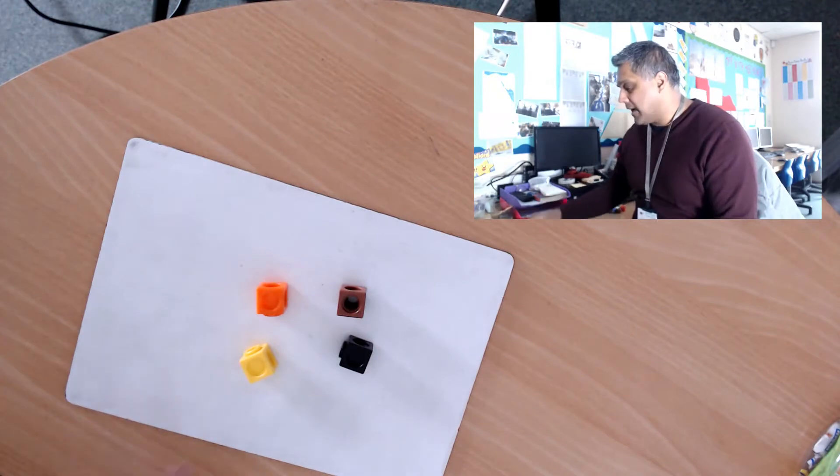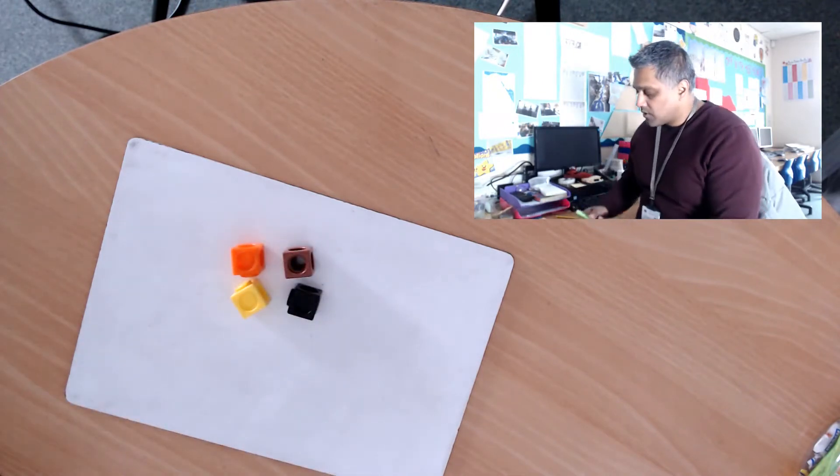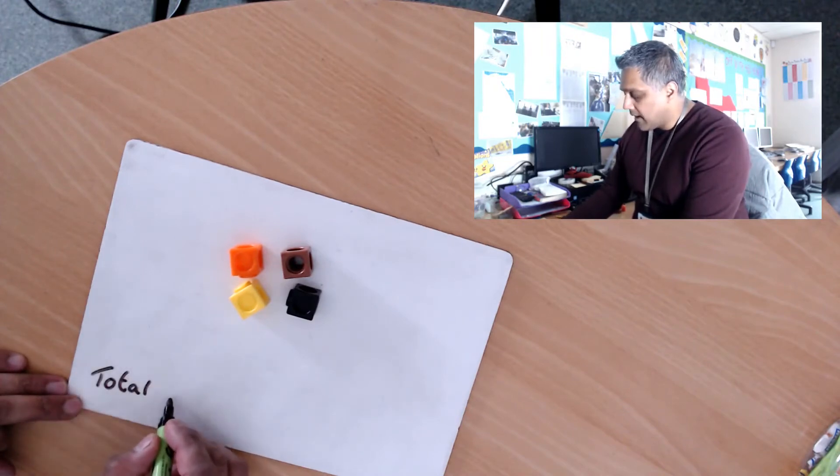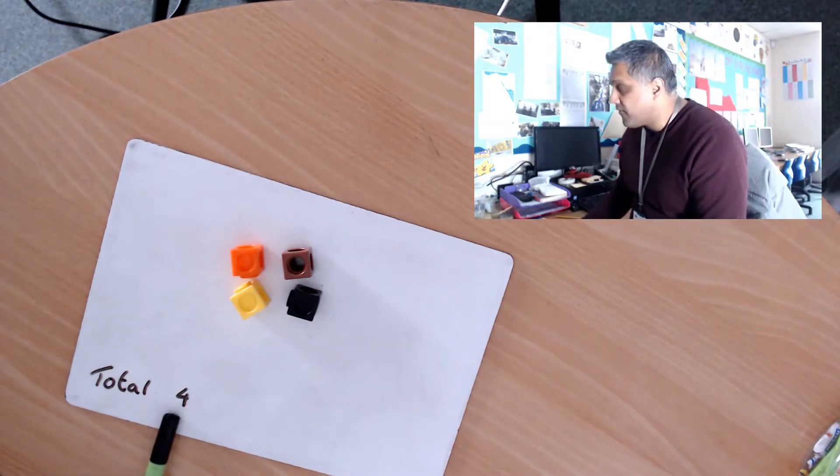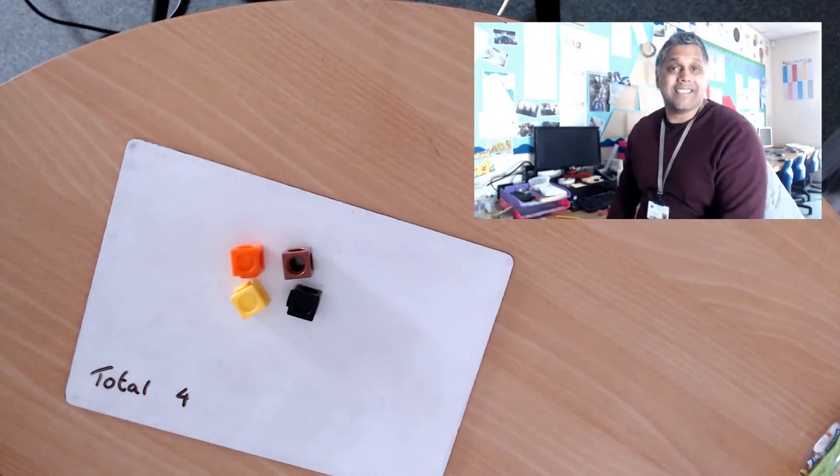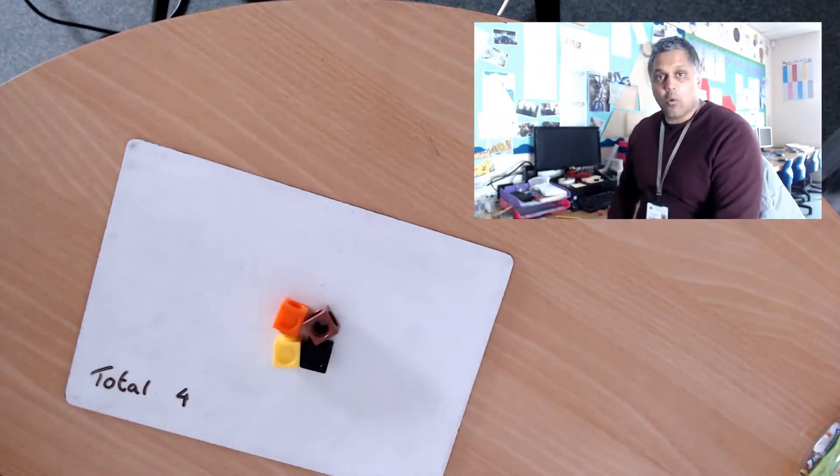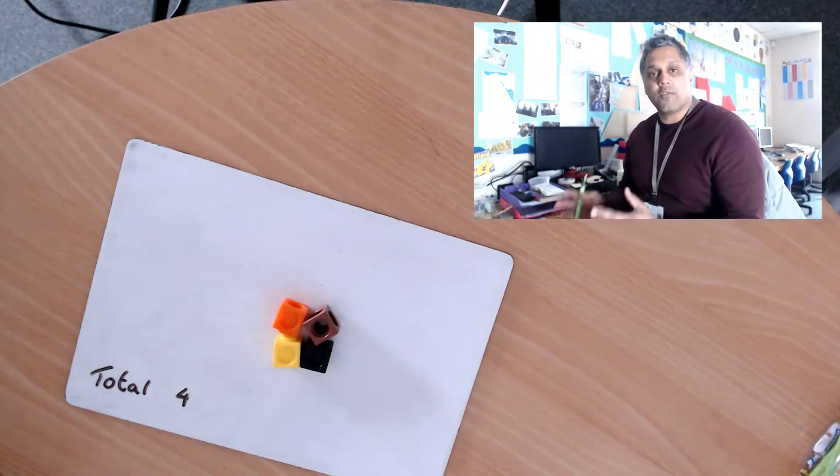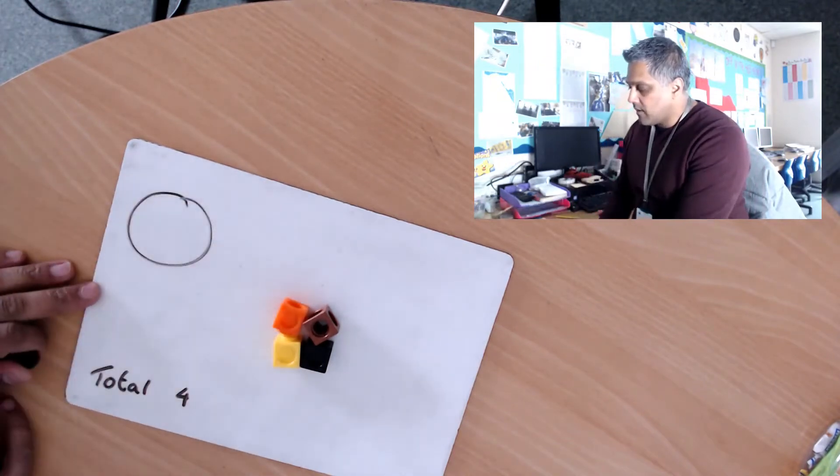I'm going to count how many blocks we have: one, two, three, four. So in total I have four blocks. Is this number four odd or even? If a number is even, we say that we can divide it or share it into two different groups equally. So imagine there's one group there and one group there, or maybe you can share them between you and someone at home.